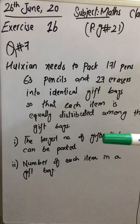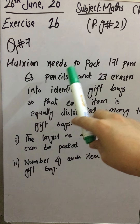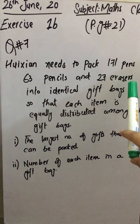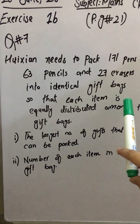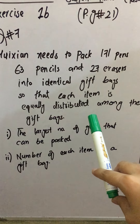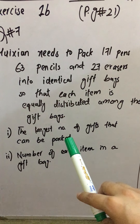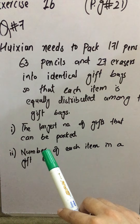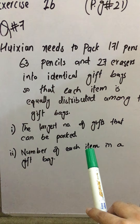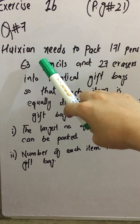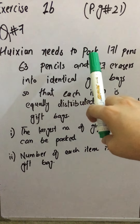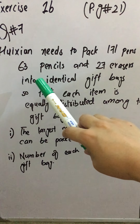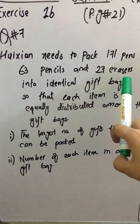Today we are going to apply these tricks in this question. Hookzian needs to pack 171 pens, 63 pencils, and 27 erasers into identical gift packs so that each item is equally distributed among the gift packs. We have to find the largest number of gifts that can be packed and the number of each item in a gift bag.